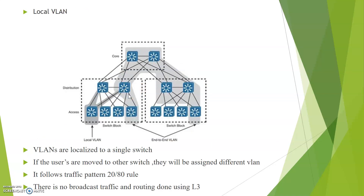So what is local VLAN? In the case of local VLAN, the VLANs are configured and localized to a single switch. If users are moved to a different switch block, they will be assigned to different VLANs, because the VLANs are local to that switch. It follows the traffic pattern 20 by 80 — meaning 20% of the traffic stays within the local and 80% for accessing external resources. Local VLANs are very easy to configure since there is a single set of VLANs and VTP is not required. There is no excess broadcast traffic and routing is done using Layer 3.